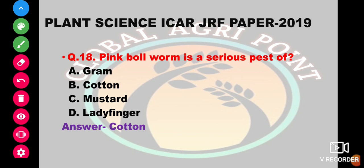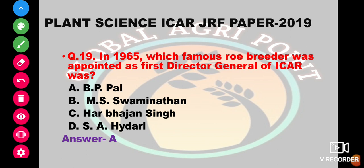Pink bollworm is a serious pest of grain, cotton, mustard, or ladyfinger. The answer is cotton. In 1965, which famous rose breeder was appointed as the first Director General of ICAR? The options are B.B. Pal, M.S. Swaminathan, Harbhajan Singh, or S.A. Hydri. The answer is B.B. Pal.